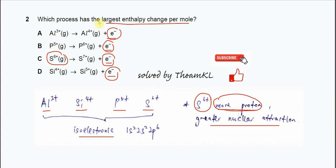So therefore we know that the S6 positive is going to use more energy to release the electron. And we know that it's going to have the largest enthalpy change per mole. So answer, confirm, is C. Okay, that's all. Thank you.